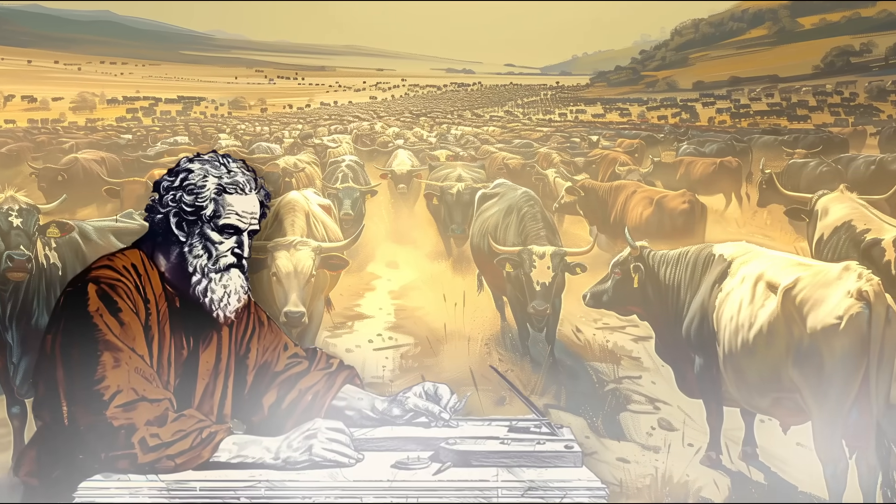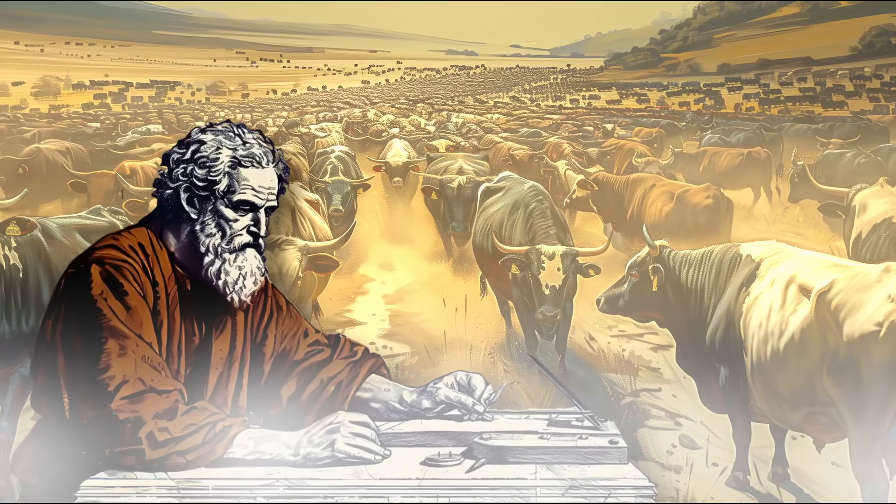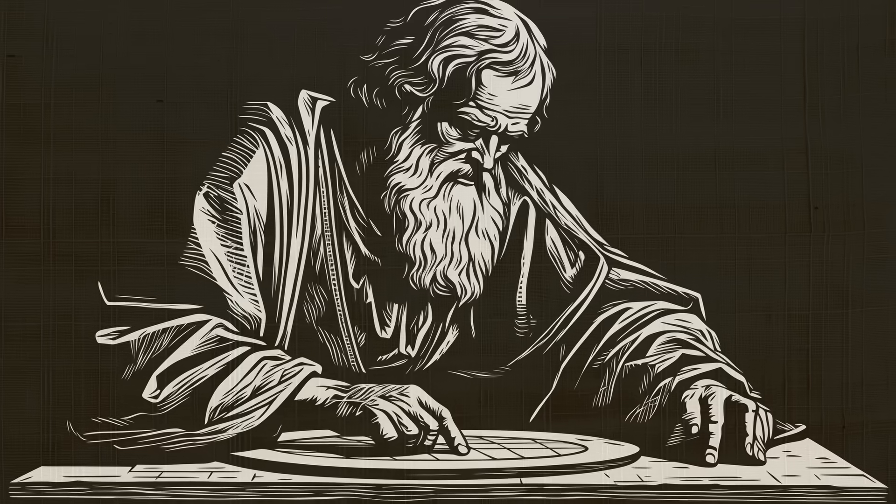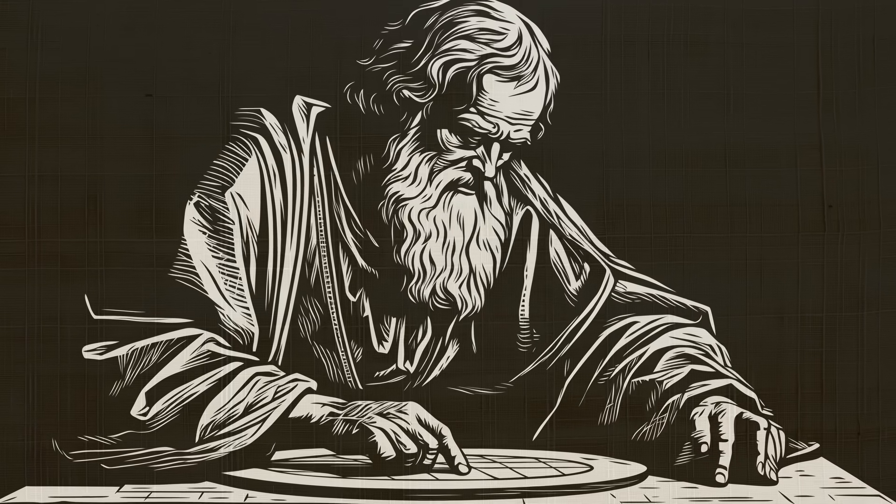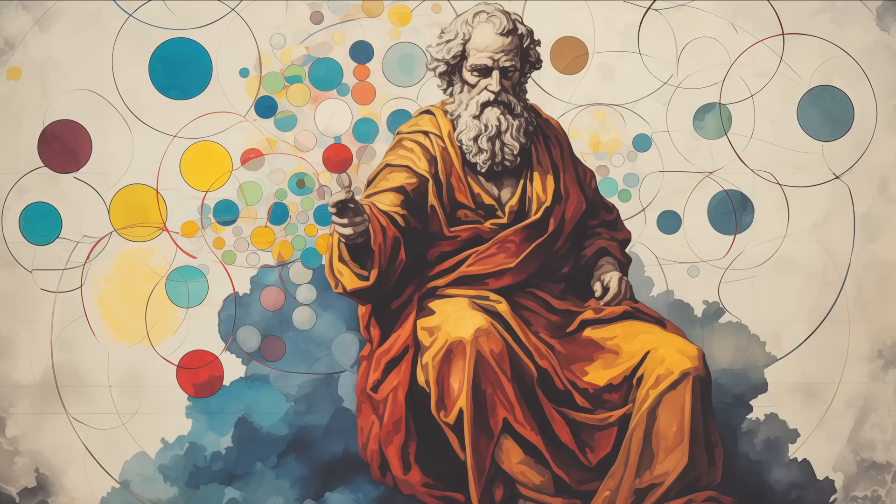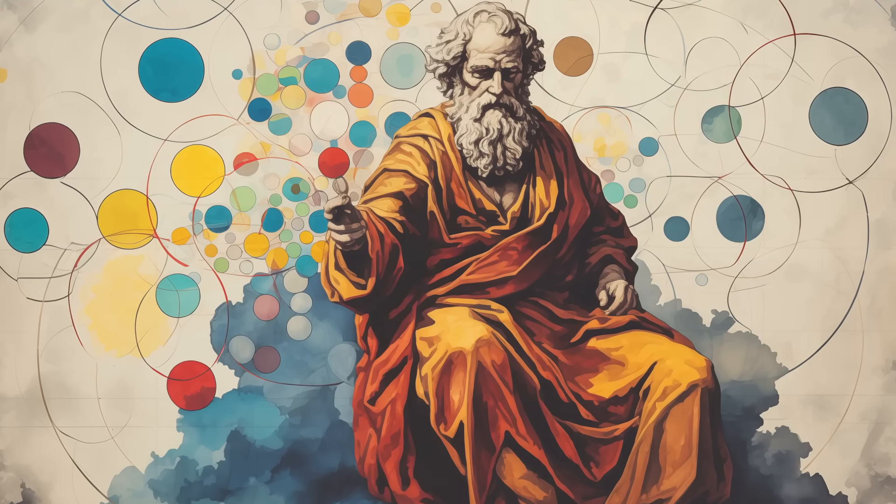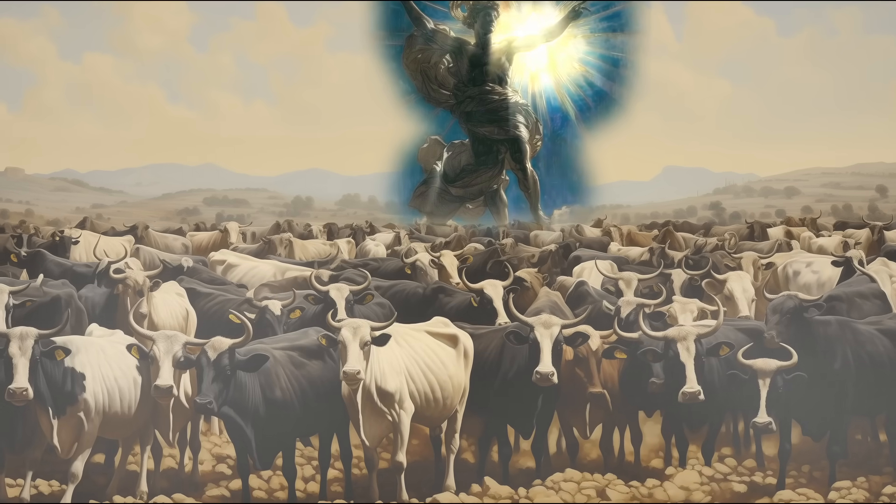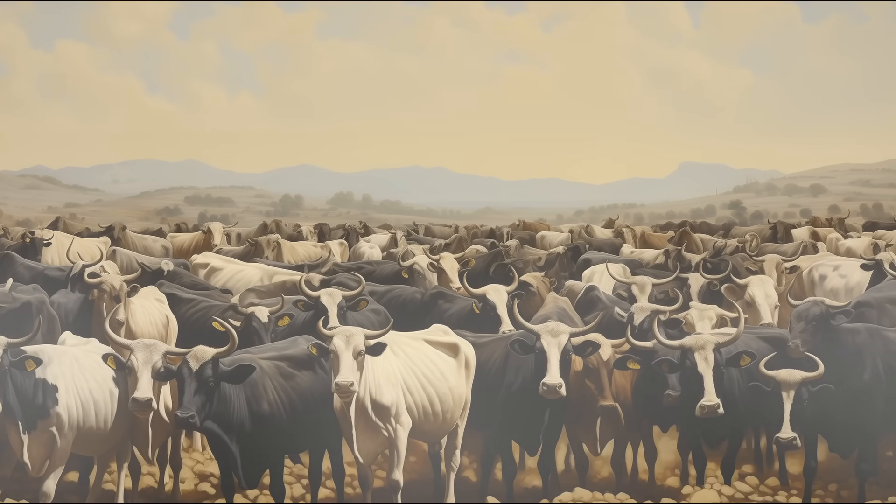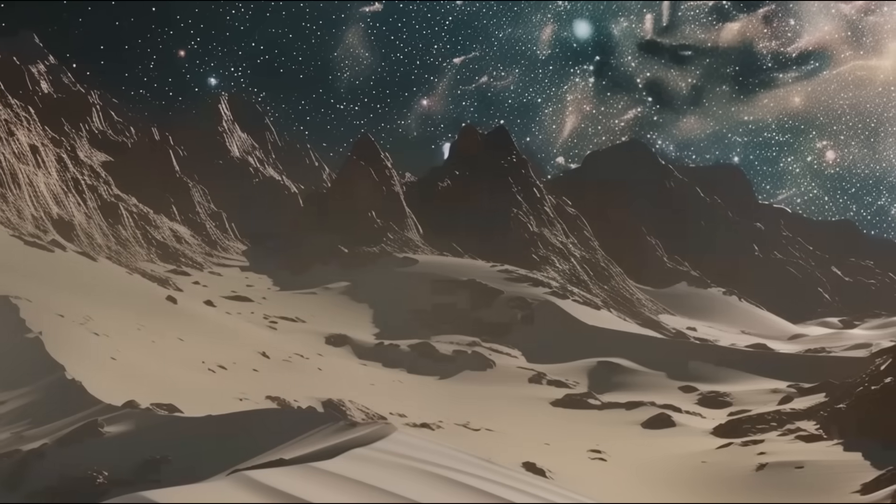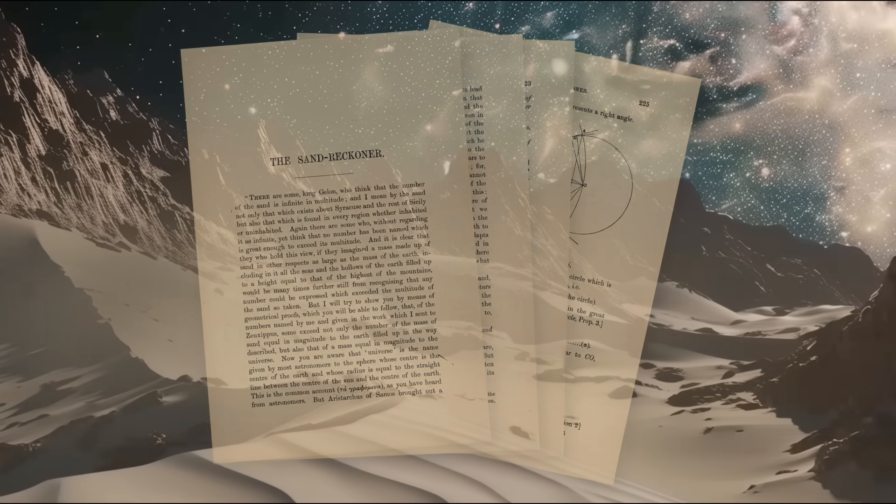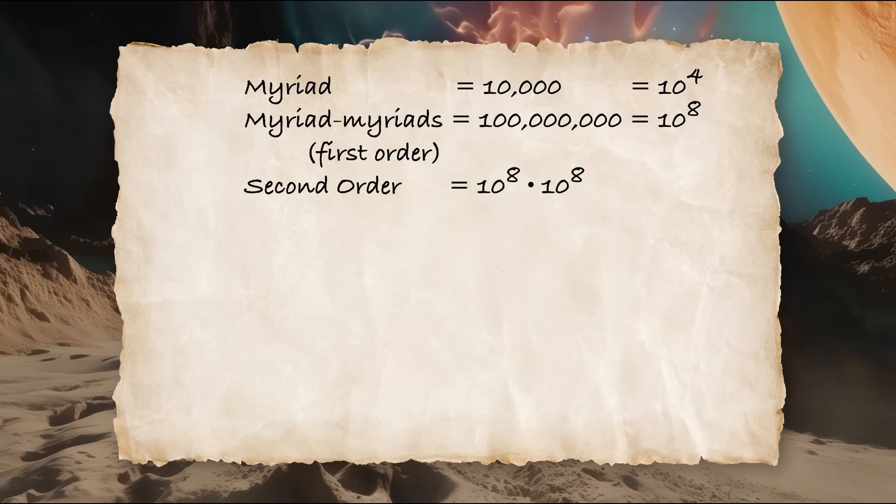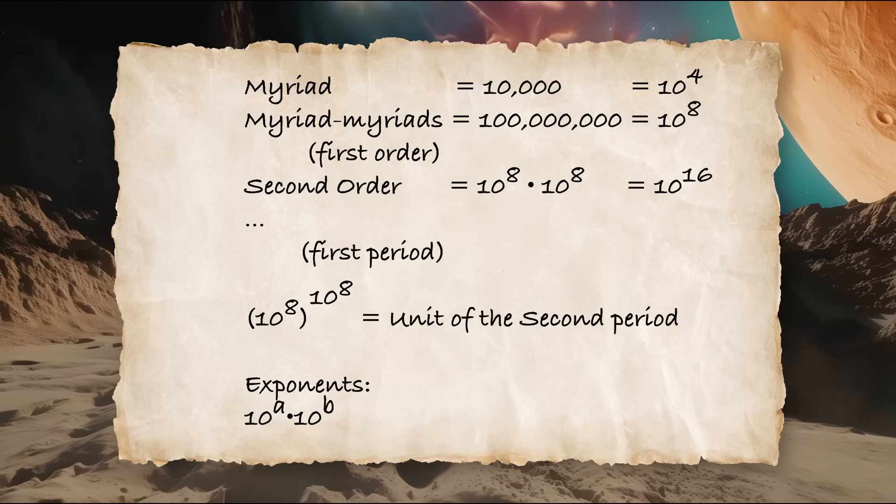So why would Archimedes have sent this problem to Eratosthenes anyway? Was it some kind of prank? If it was, it wouldn't have been out of character for Archimedes. Based on his writings, it does seem like he enjoyed needling his fellow mathematicians who weren't quite at his level. He was known to send out deliberately incorrect discoveries to see if anybody would take the bait and try to prove that something wrong was right. But this cattle problem was more than just a prank. It gives us a sense of Archimedes' love for huge numbers, something that he also wrote about in the Sand Reckoner, where he tried to calculate the number of grains of sand in the universe. In the process, he invented a system for describing very large numbers and discovered the basic laws of exponents.